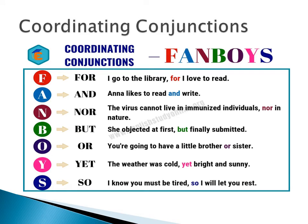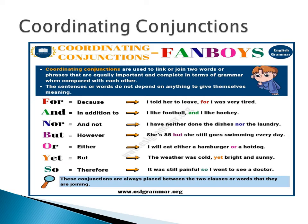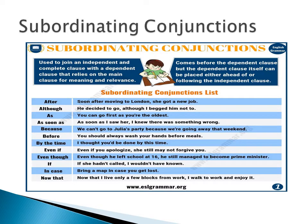Next slide, we have the same coordinating conjunctions and their examples. I'm going to pause this video and you can read it by yourself. Well done, Grade 6 students. The same coordinating conjunctions — they are used to link or join two words or phrases that are equally important and complete in terms of grammar. The sentences or words do not depend on anything to give themselves meaning. You can pause this video, and I'd like you to use the FANBOYS in your own sentences. You can write your answers in your English Copybook. Well done, Grade 6 students, for writing your own sentences using the coordinating conjunctions.